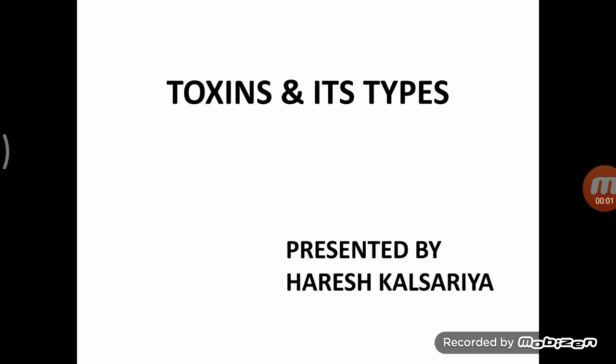Hello friends, good morning. My name is Harash Kalsari. I am presenting about toxin and its types. Toxin is a toxic substance that produces pathogenic characteristics — some disease characteristics — when it enters into an individual's or animal's body. We know there are two types of toxin: endotoxin and exotoxin.